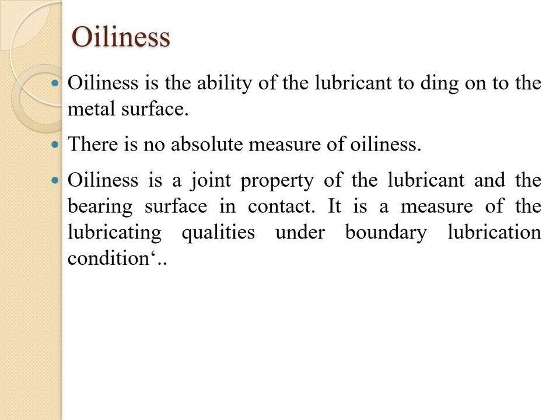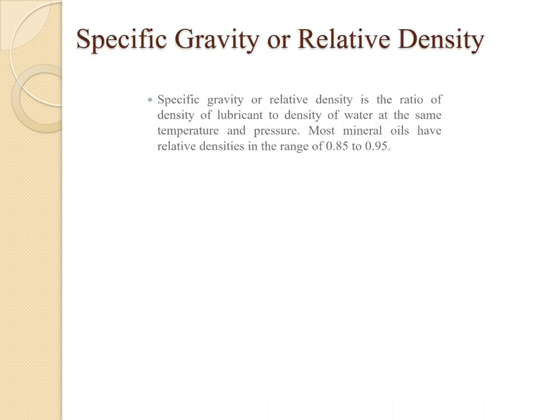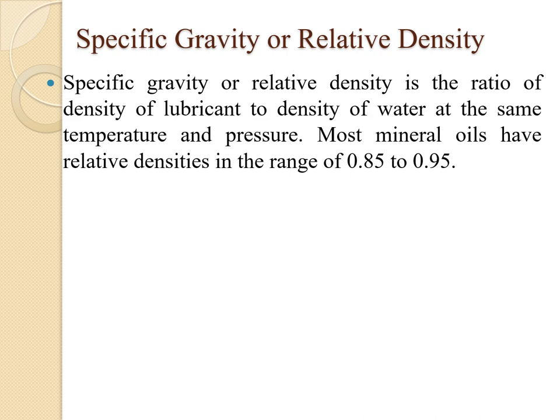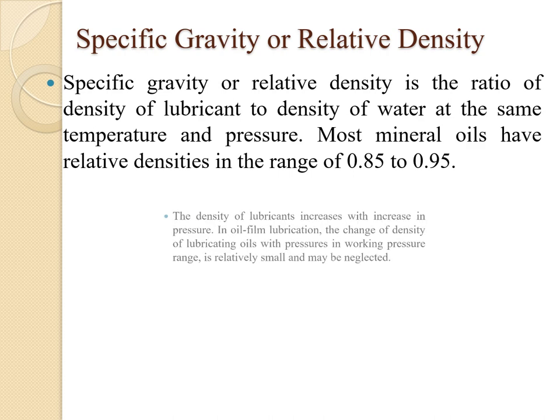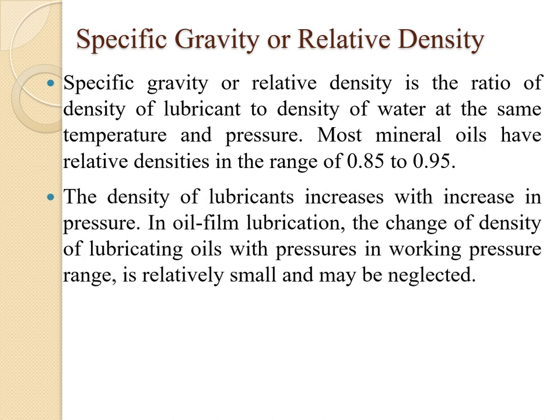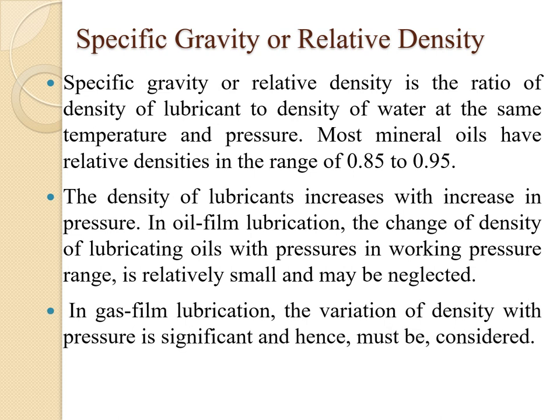Oiliness is the ability of a lubricant to cling to the metal surface. There is no absolute measure of oiliness; it is a joint property of the lubricant and the bearing surface in contact, and is a measure of lubricating qualities under boundary conditions. Specific gravity or relative density is the ratio of the density of the lubricant to the density of water at the same temperature and pressure. Most mineral oils have relative density in the range of 0.85 to 0.95. The density of lubricants increases with increase in pressure, though the change is relatively small in oil lubrication and may be neglected.